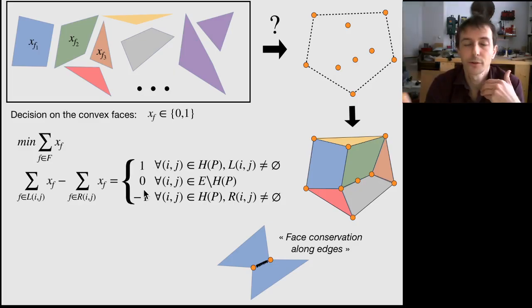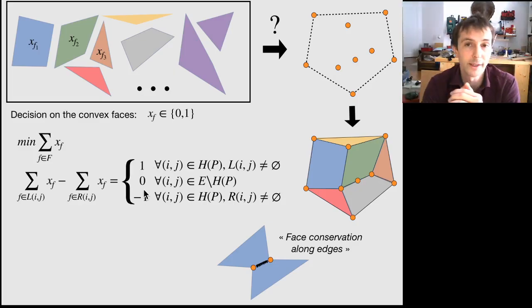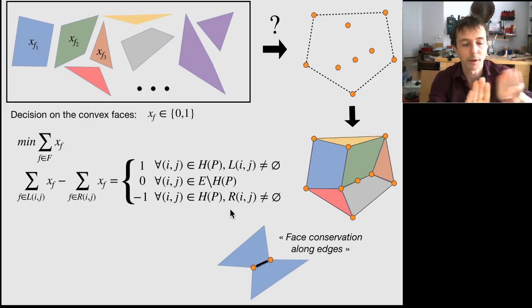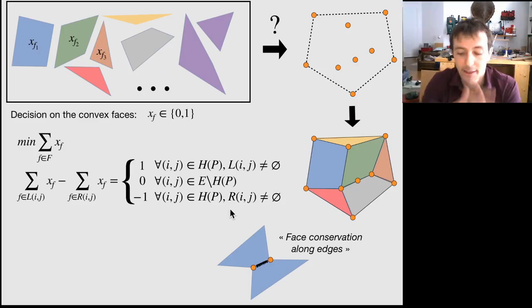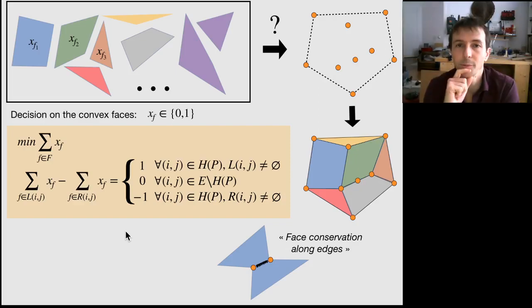And they act like sources or sinks of faces, typically. So this overall is like a tiling constraint, enforcing faces to match each other along edges. And that constraint alone is enough to define a valid formulation for this problem.